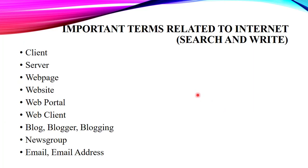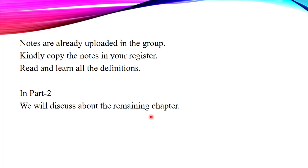There are some homework topics for you all. You have to search and write about the following: client, server, web page, website, web portal, web client, blog, newsgroup, emails and email addresses. You have to search for all these topics and write them in your computer register. In the next class, we will discuss the remaining part of this chapter. Thank you so much for watching.